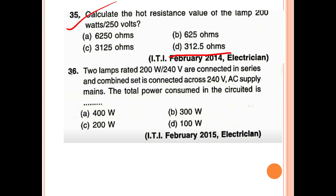36th question: Two lamps rated 200 watt and 240 volt are connected in series, and the combined set is connected across a 240 volt AC supply. The total power consumed in this circuit — the answer is 100 watt.